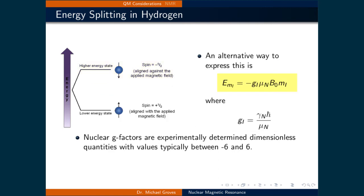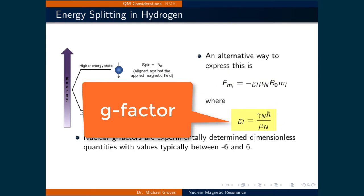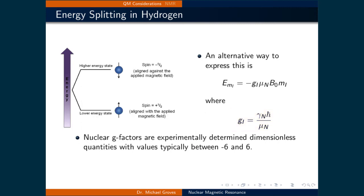This change in energy can be alternatively expressed as negative g times the magnetic moment times the magnitude of the magnetic field times the spin, where g is called the g factor, and it's equal to gamma sub n times h bar divided by the magnetic moment. The g factor is an experimentally determined dimensionless quantity with values typically between minus 6 and 6.